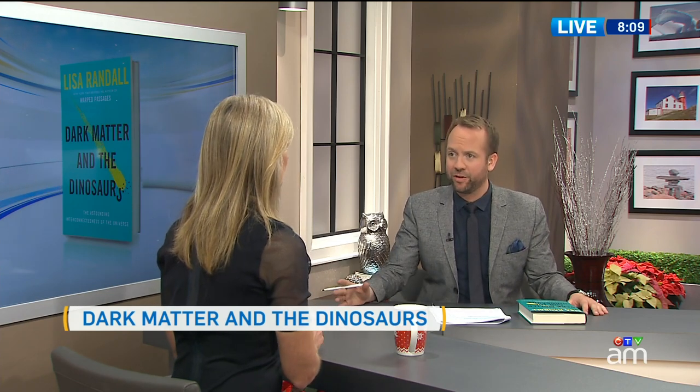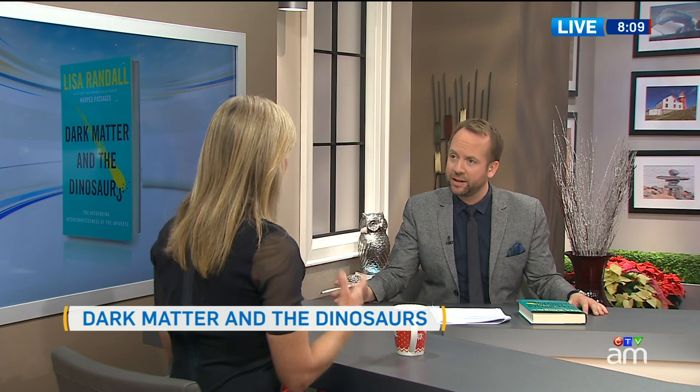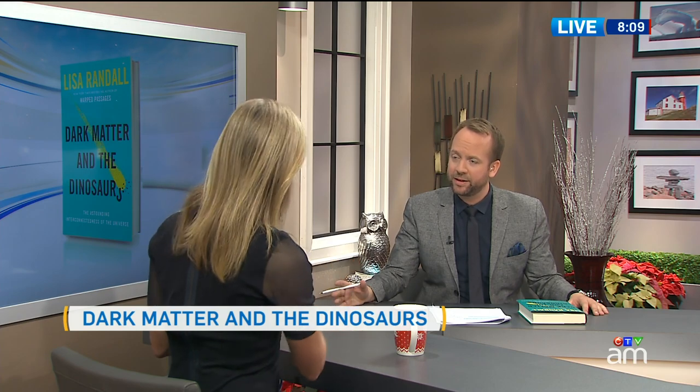This stuff is very prevalent in the universe. There's actually five times the energy in dark matter as there is in ordinary matter. We're kind of ordinary matter chauvinists — we kind of ignore all of it, but it's actually very important. So how did this dark matter interact with the comet that ultimately led to the dinosaurs' extinction?